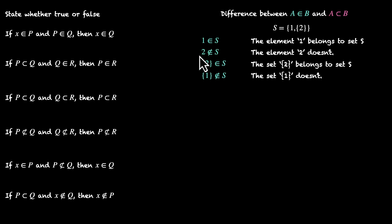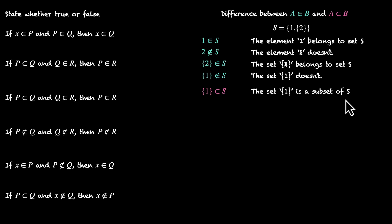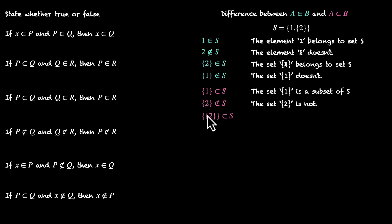If you have elements that belong to S, you can use them to create subsets. For example, you can use element 1 to create a subset of S — the set that contains 1 is a subset of S. What about the set that contains 2? That's not a subset of S, because we need element 2, and we don't have element 2 inside S. Instead, the set that contains the set that contains 2 is a subset of S, because that element — the set containing 2 — can be found in S.